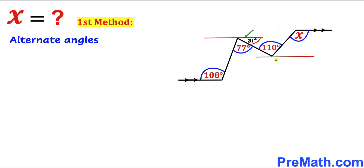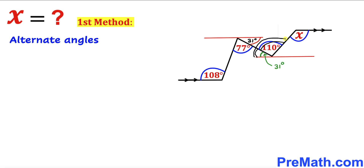We can see that these two straight lines are parallel and this line is a transversal. So this angle and this angle are going to be alternate angles and they are going to be congruent. If this angle is 31 degrees, then this angle is 31 degrees as well. Now we can see that this angle is 110 degrees and this angle is 31 degrees, so this whole angle is going to be 110 plus 31 degrees, which makes 141 degrees.